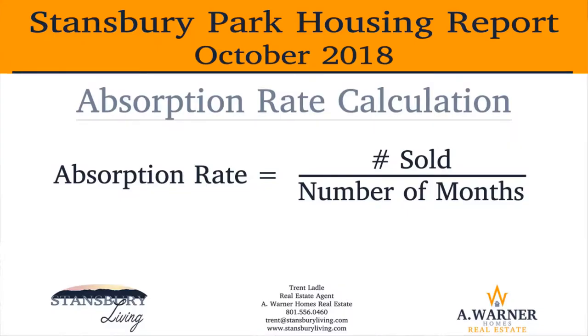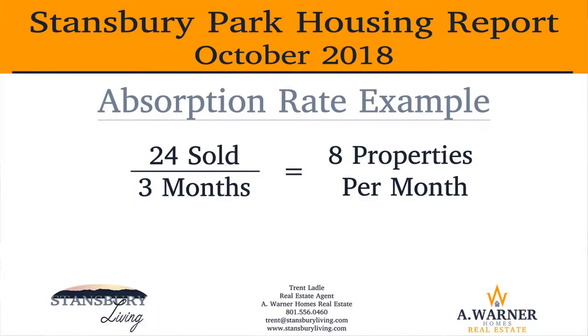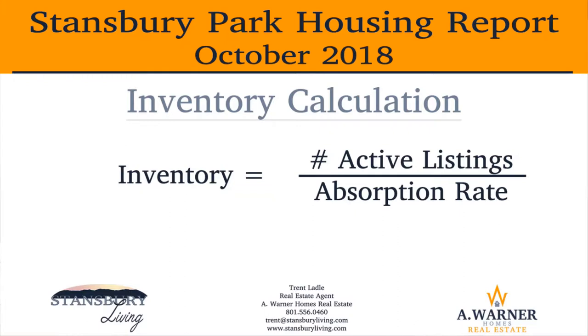Absorption rate is calculated by dividing the number of properties sold by the number of months, and the result is in a properties-per-month ratio. For example, if there were 24 properties sold over the past three months, the absorption rate is eight properties per month.